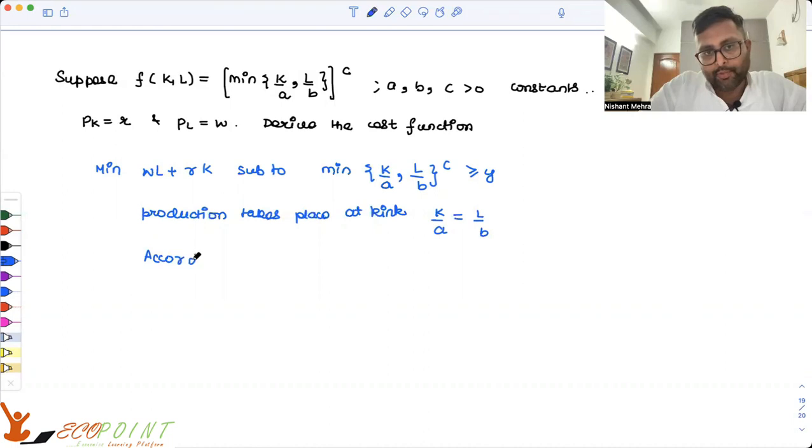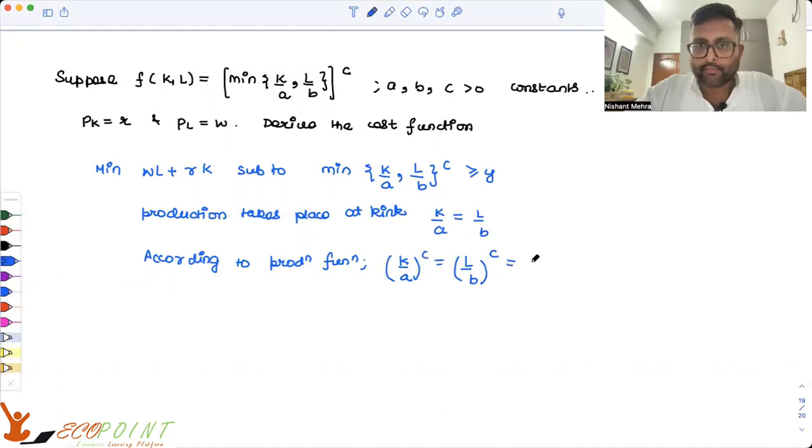So according to the production function, k by a to the power c equals to l by b to the power c equals to y.